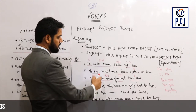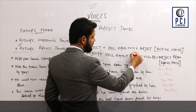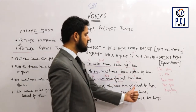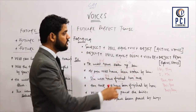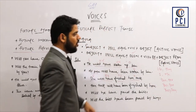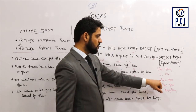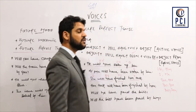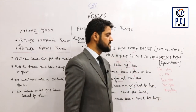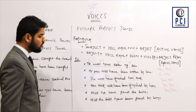Here you can see that the object 'her task' comes to the subject position. 'Will have' stays the same — you just add 'been' and then use the third form of the verb according to the formula, then add 'by' and the object pronoun. 'She' as subject pronoun becomes 'her' as object pronoun. I will provide the pronoun chart in the description box.